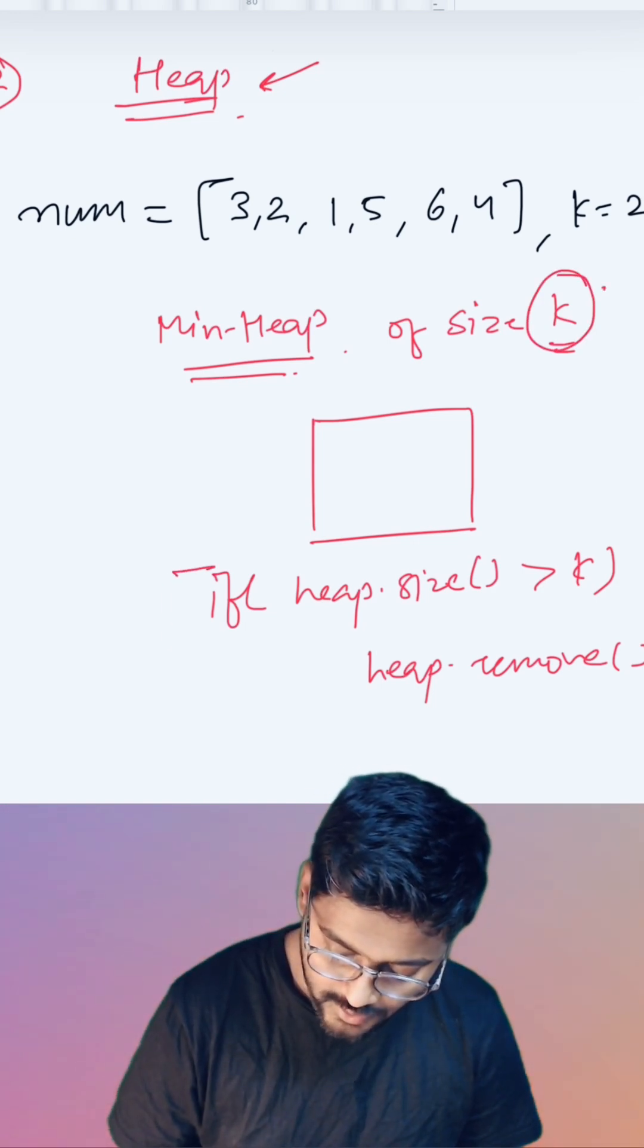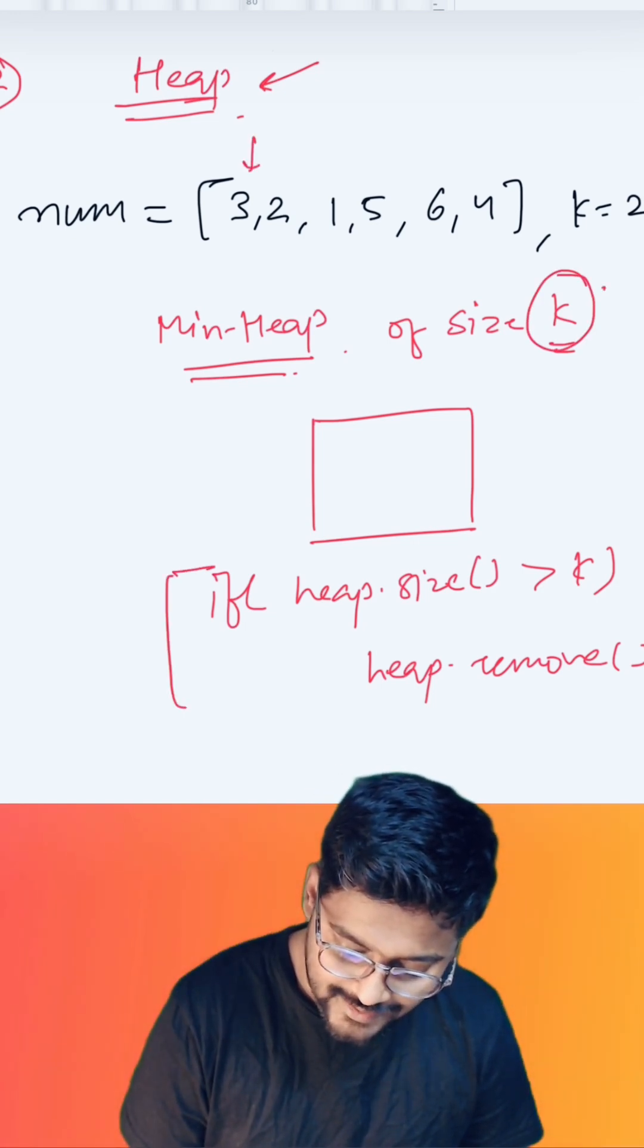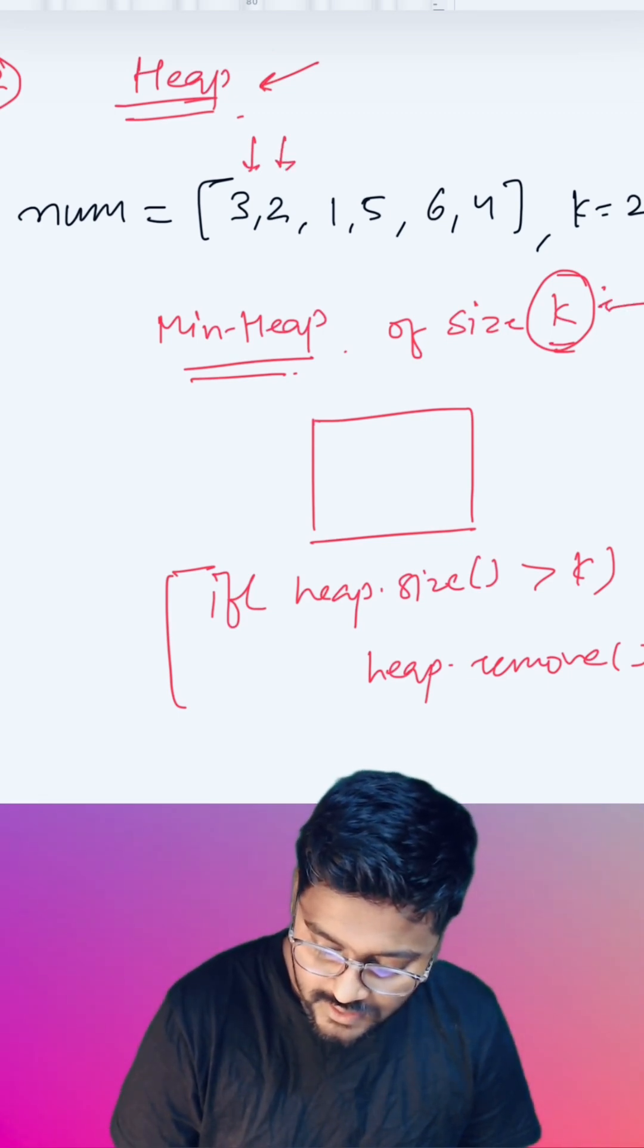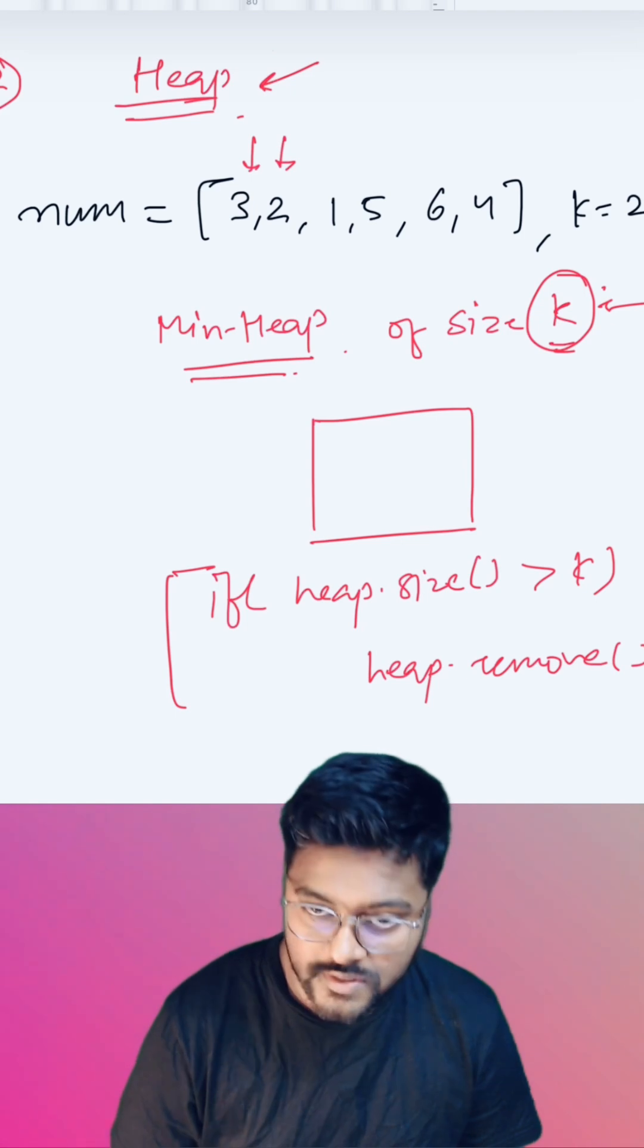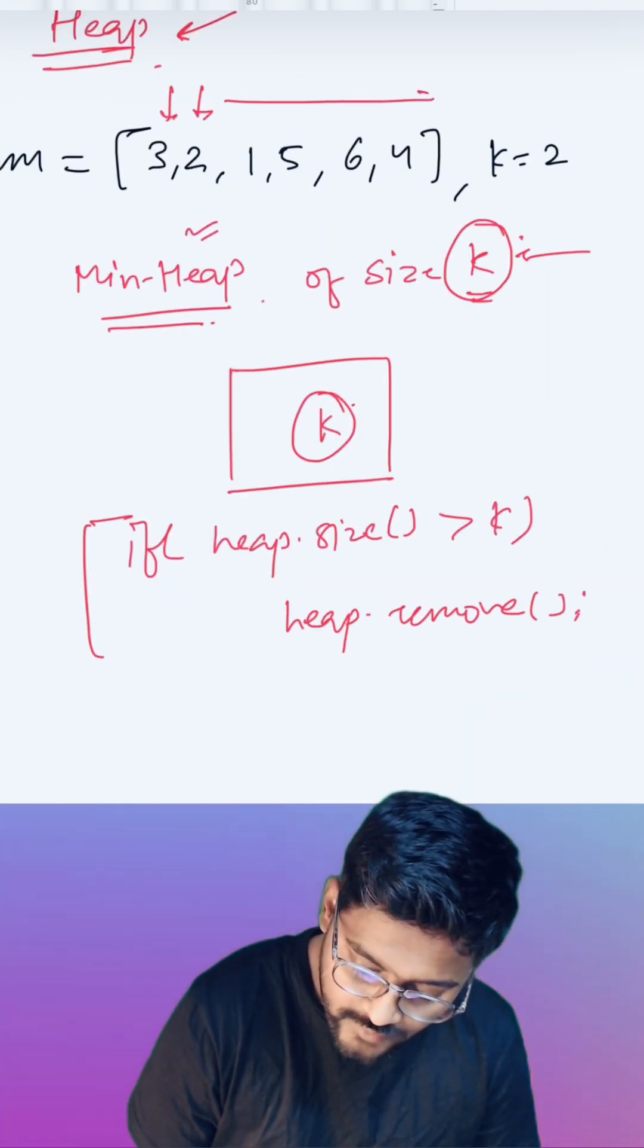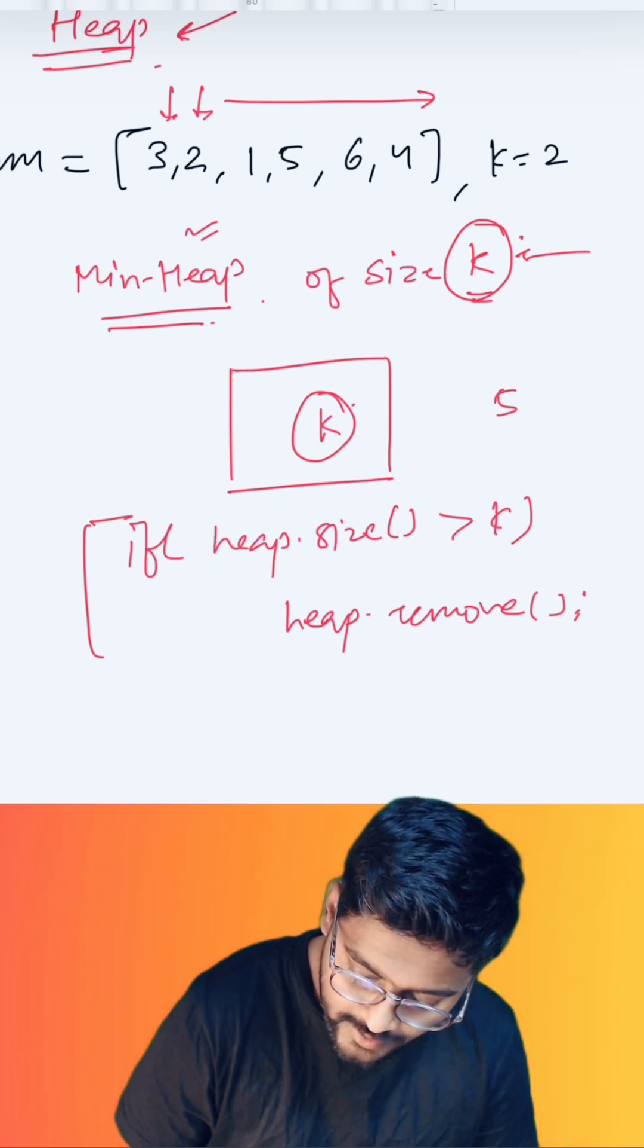And how can we take benefit of that heap? We'll keep on inserting these elements in the heap one by one, and whenever the size of the heap is reaching k or crossing k, we are going to remove the element from the min heap. So at the end of this iteration, we are going to have two elements in the heap.